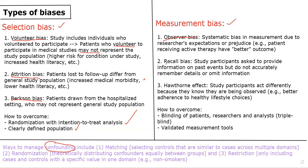A second type of measurement bias is recall bias. This is when study participants are asked to provide details from the past but don't accurately remember the events or potentially omit information. This is especially a problem when asking people to recall information from five or ten years ago — for example, a patient presenting with cancer is asked whether they were ever exposed to a nuclear power plant in childhood. Some people may remember, some may not, and that can introduce potential bias.